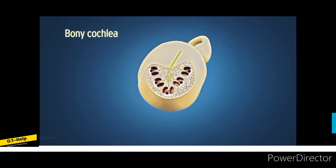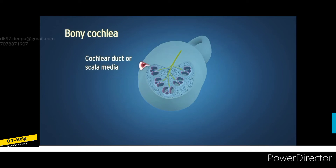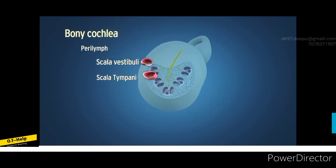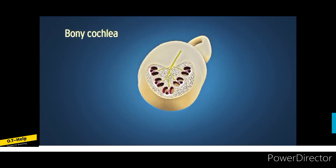The part of the cochlear canal above the vestibular ligament is known as scala vestibuli, and the part below the basilar membrane is known as scala tympani. The cochlear duct or scala media is present between scala vestibuli and tympani. Scala vestibuli and tympani are filled with perilymph, while scala media is filled with endolymph. Scala vestibuli and tympani communicate with each other at the apex of the cochlea through the helicotrema.